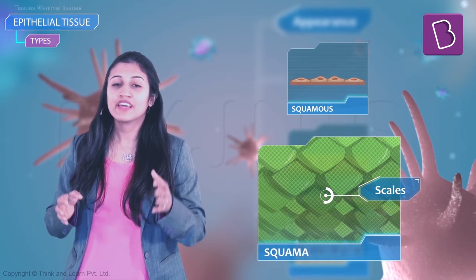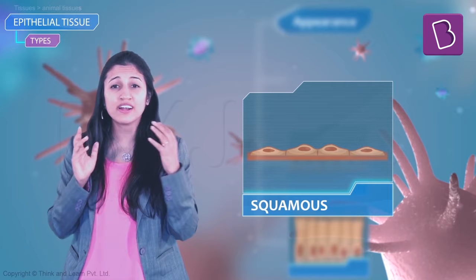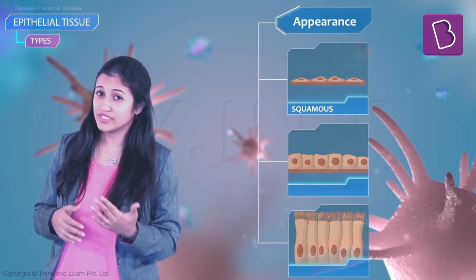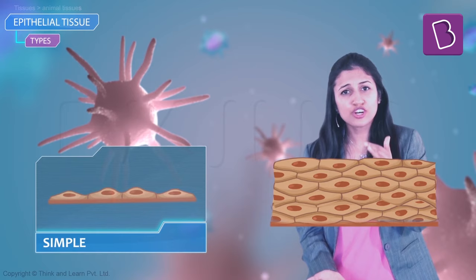True to the name, squamous cells look like scales — just not hard; in fact, they are very soft. The other two have very obvious names: cuboidal and columnar. If you put a single layer, it's called simple, and if you put many layers, it's called stratified.